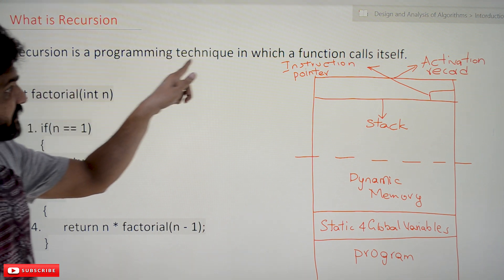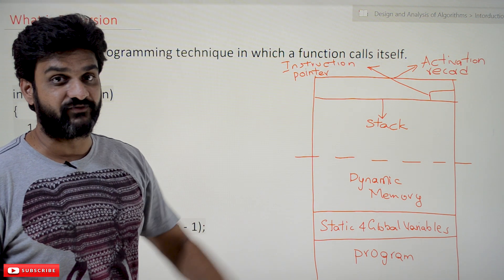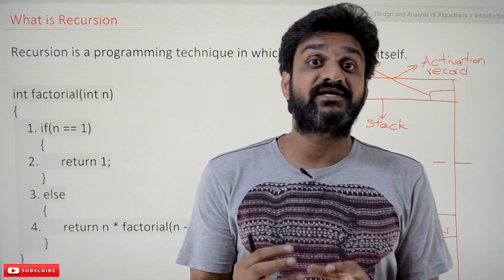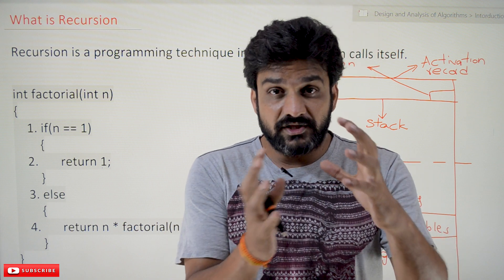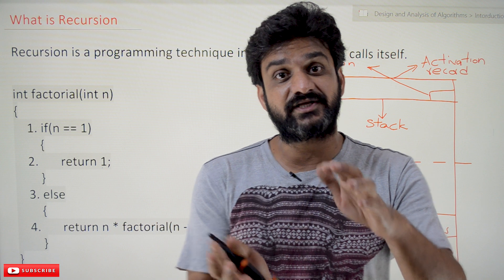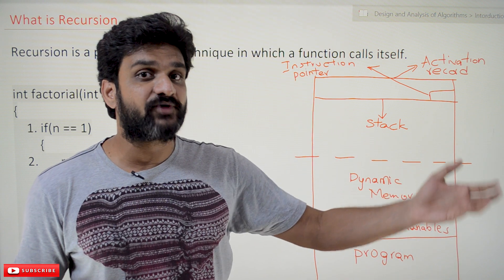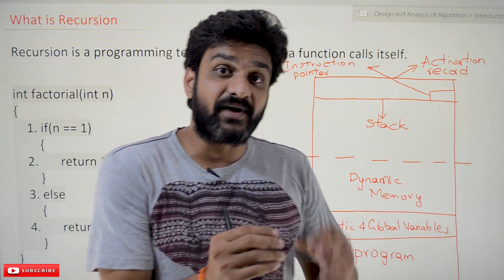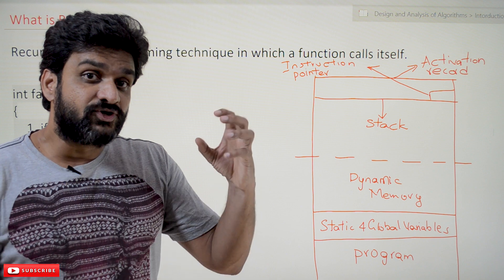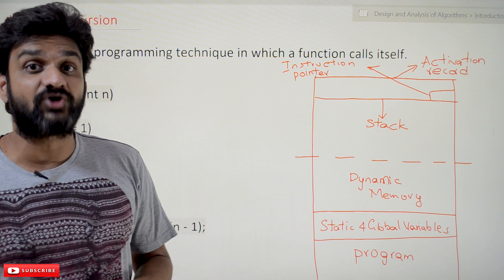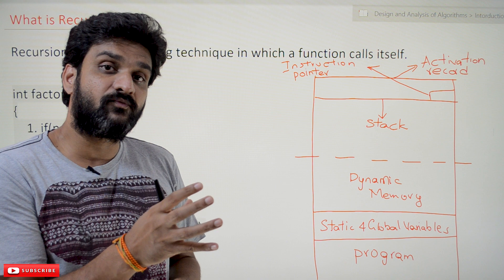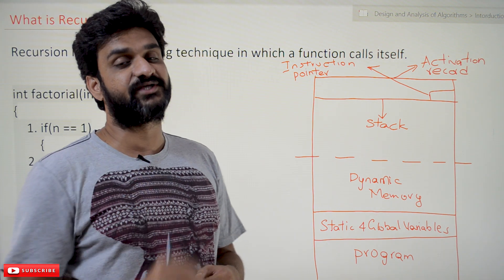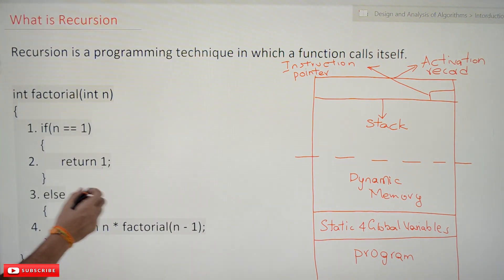Recursion is a programming technique in which a function calls itself. So far in our programs and algorithms we have covered different types of iterative methods — using for loop, while loop, or do-while loop. There is another kind of technique, which is what we call recursion. Using recursion we can also solve problems. If a function is calling itself, that is what we call recursion.